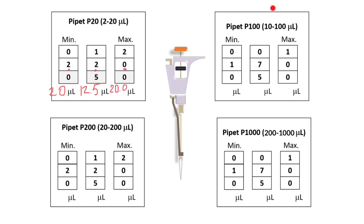Next, micropipettor readings are pretty easy when we work with volumes between 10 and 100 microliters. The first reading is going to be 10 microliters, the next one is going to be 75 microliters, and the last one is going to be 100 microliters.